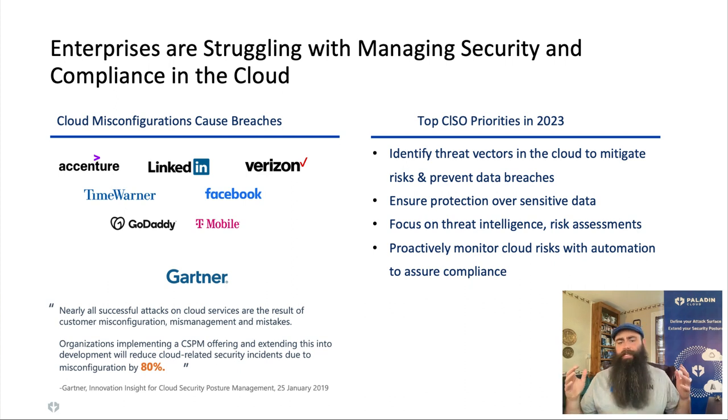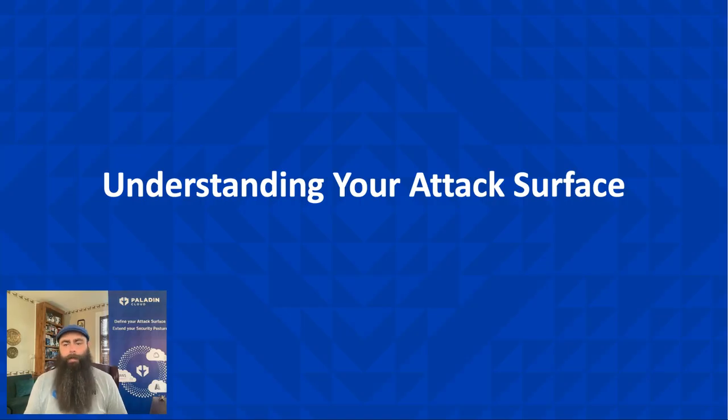CISOs and security teams have a lot to deal with, but here are some of the top concerns we're hearing right now: trying to identify threat vectors in the cloud to mitigate risks and prevent data breaches, ensuring protection over sensitive data, a focus on threat intelligence and risk assessments, and proactively monitoring cloud risks with automations to be sure that they're compliant. So how do organizations get a handle on this? The first step is for them to understand their attack surface.